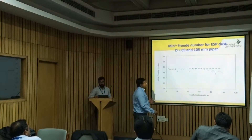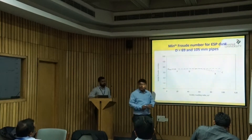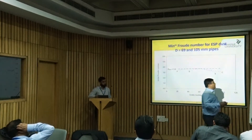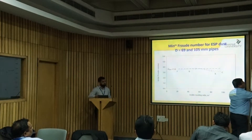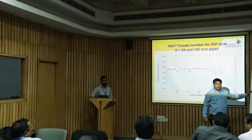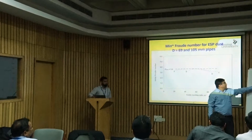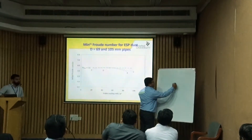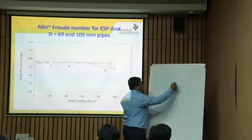We thought: is there any number that takes pipe diameter into consideration? So instead of velocity, we use the Froude number. The advantage you get is that if the diameter goes up, it tells you that you require higher velocity.